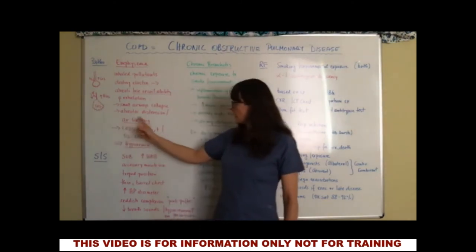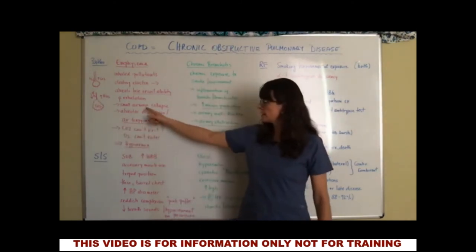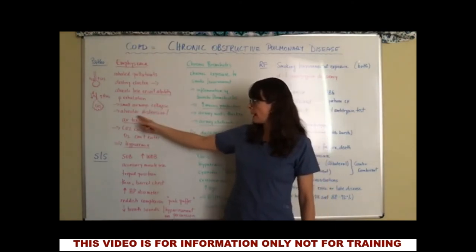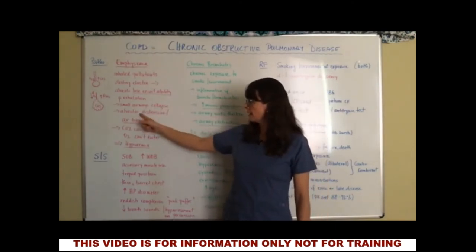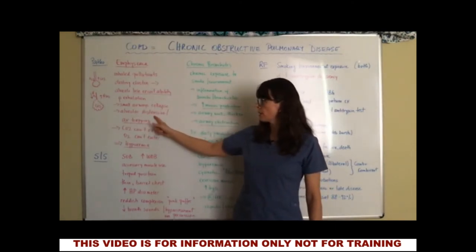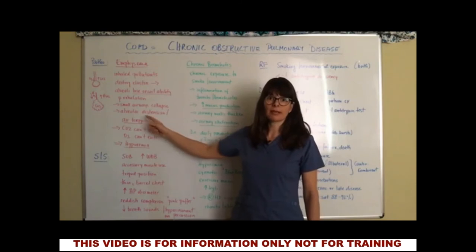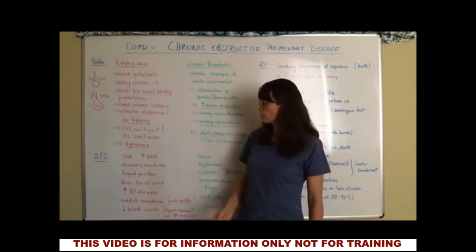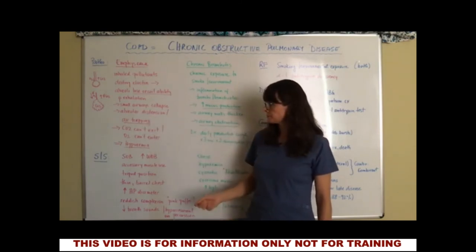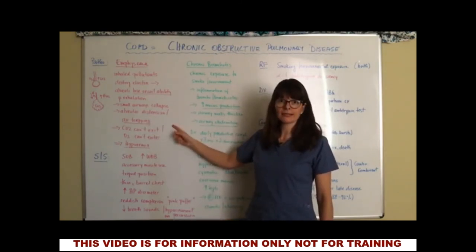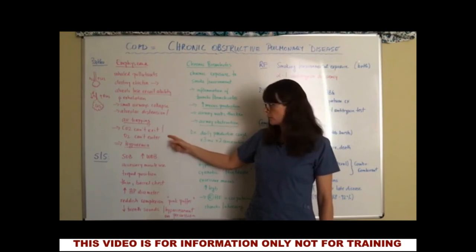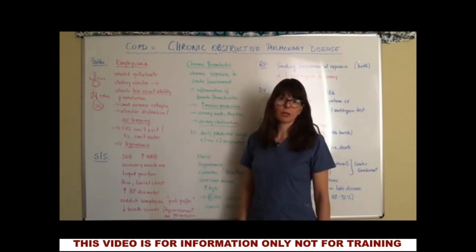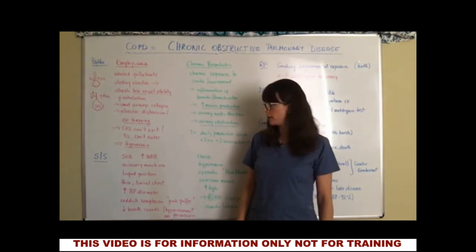The small airways then collapse, leading to alveolar distension and air trapping, which means that CO2 can't exit and O2 can't enter. Therefore, the patient will become hypoxemic — meaning less oxygen concentration in the blood.